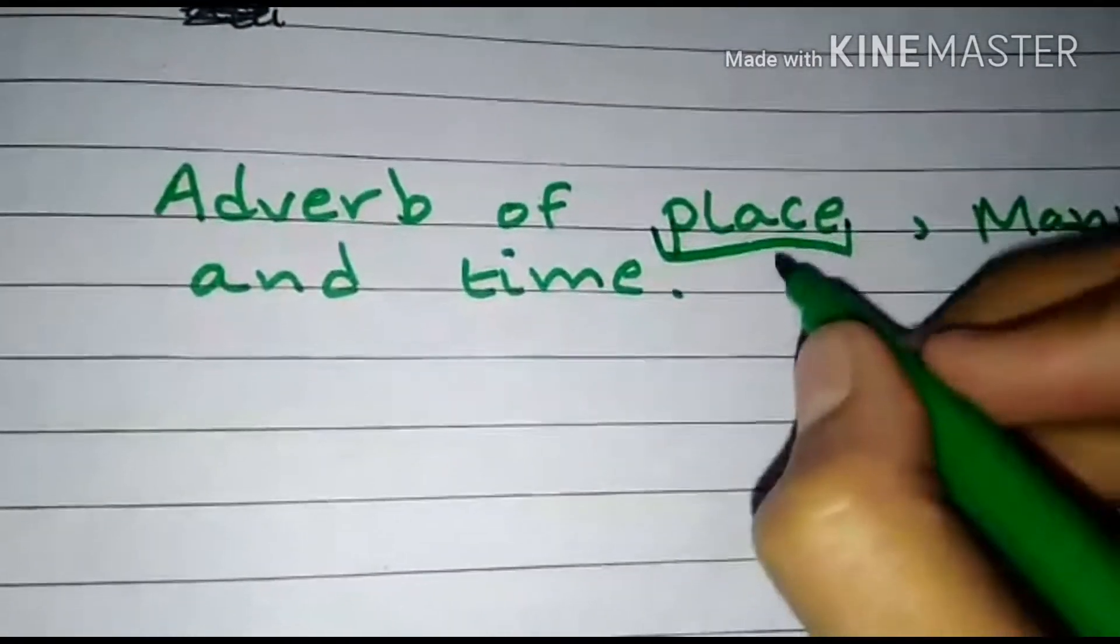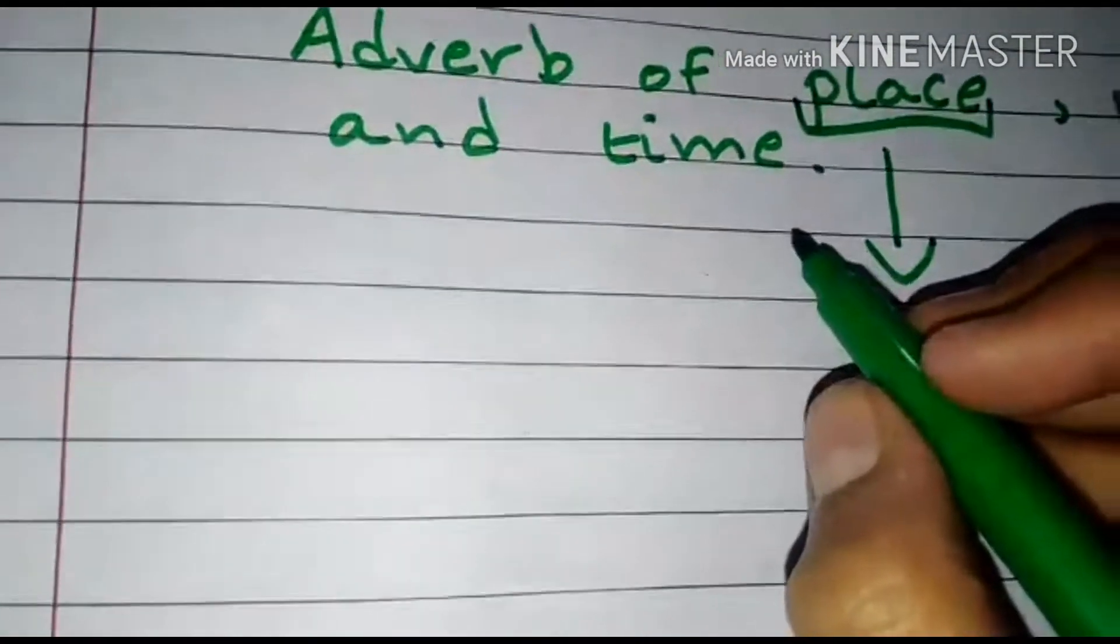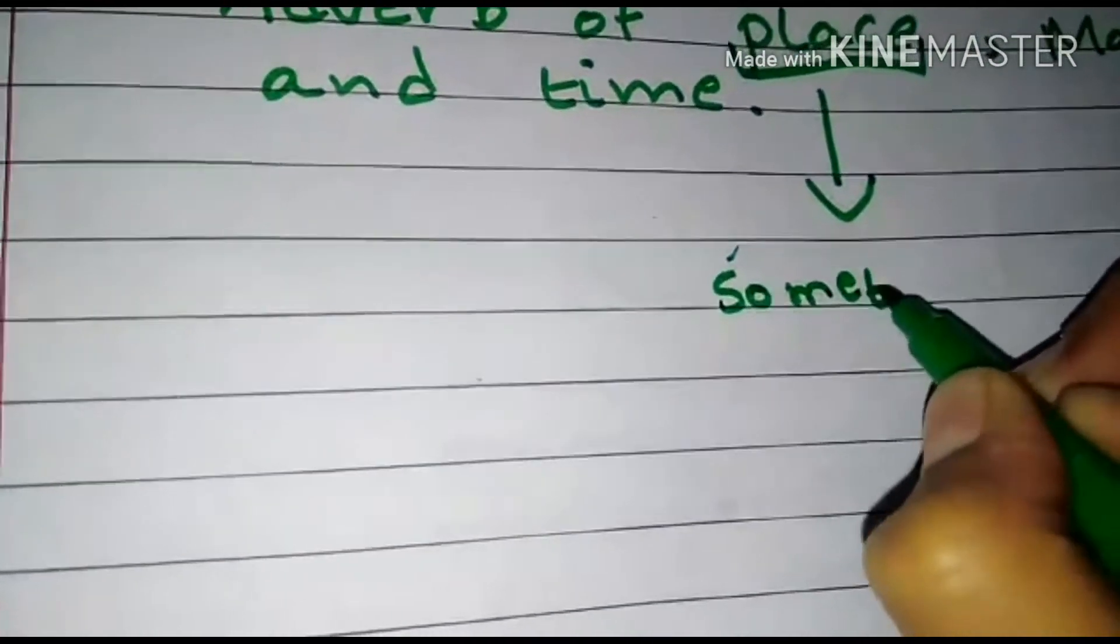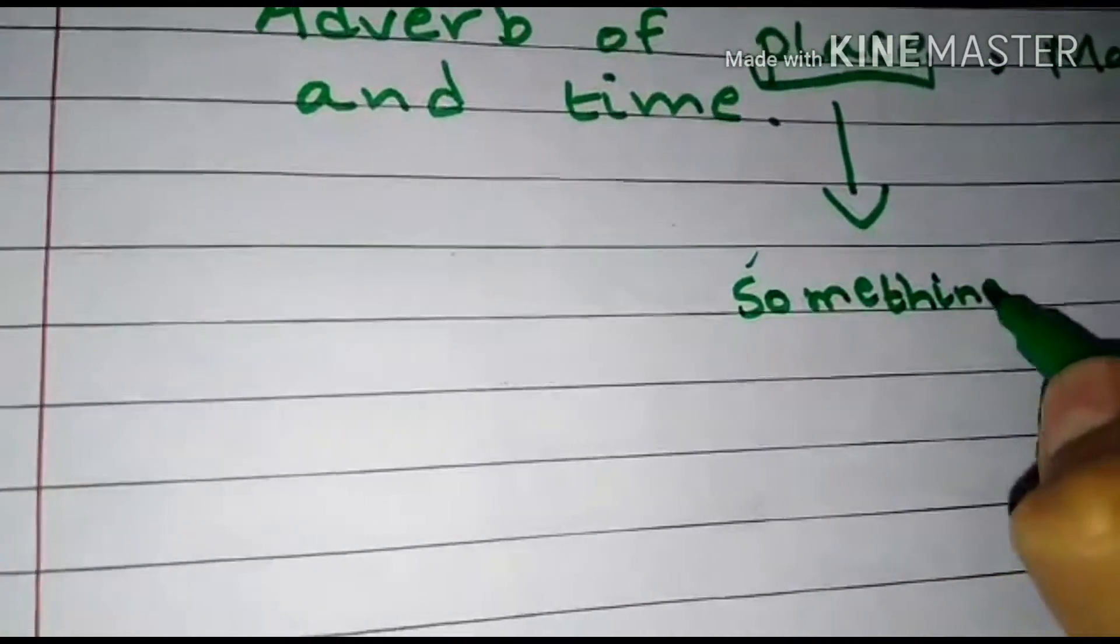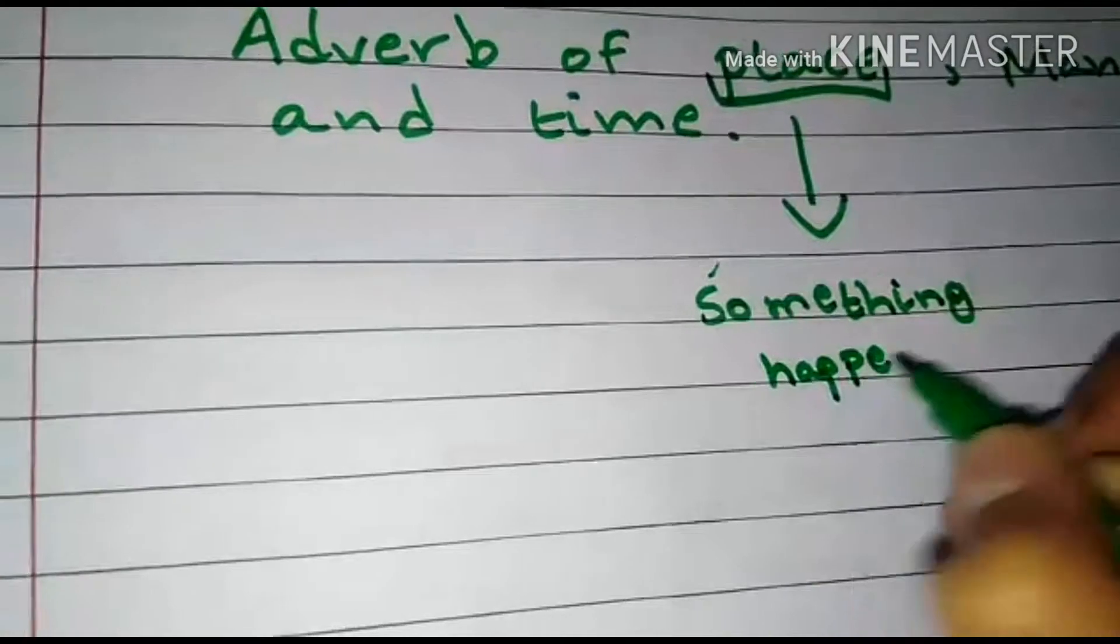So basically, adverb of place tells us where something happens.